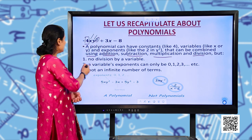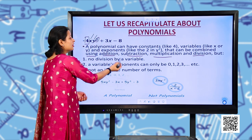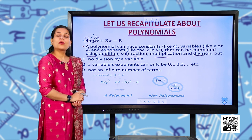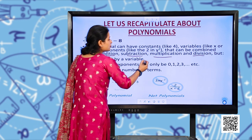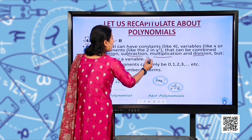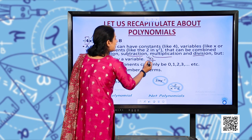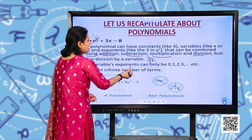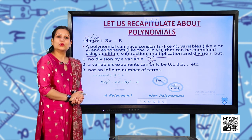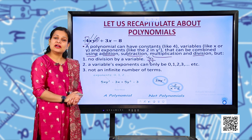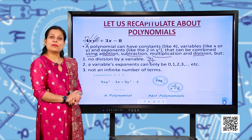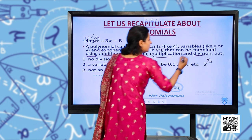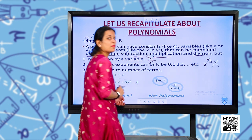But you have to remember 3 things. First: no division by a variable — you cannot divide a polynomial by a variable. For example, 4xy²/z is not a polynomial. Second: variable exponents can only be 0, 1, 2, 3 — they must be whole numbers. They cannot be fractions like 2/3. So that would not be a polynomial.